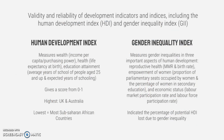Now we're going to look at different development indicators and indices. The Human Development Index measures wealth through income per capita and purchasing power, health through life expectancy at birth, and educational attainment through average years of schooling for people aged 25 and up and expected years of schooling. It gives a score from 0 to 1. The highest measurements are in the UK and Australia, and the lowest are in most sub-Saharan African countries.